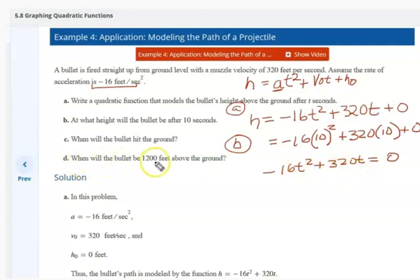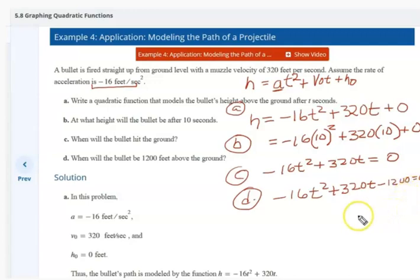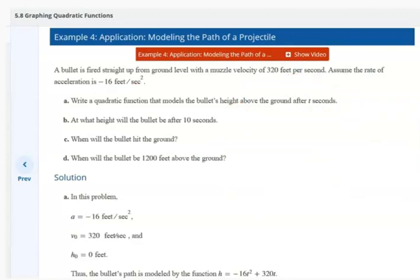And then when will the bullet be 1,200 feet above the ground. So here it's going to be this same equation. This is for C here, and then D, it would be negative 16T squared plus 320T. Over here this is going to equal 1,200. But to put it in standard form, I'm going to move it from this side back here, so negative 1,200, and then all of that equals zero. So these are the things. I could work these out, but we'll use what the book is offering. We wanted to see where they came from and then follow it along.